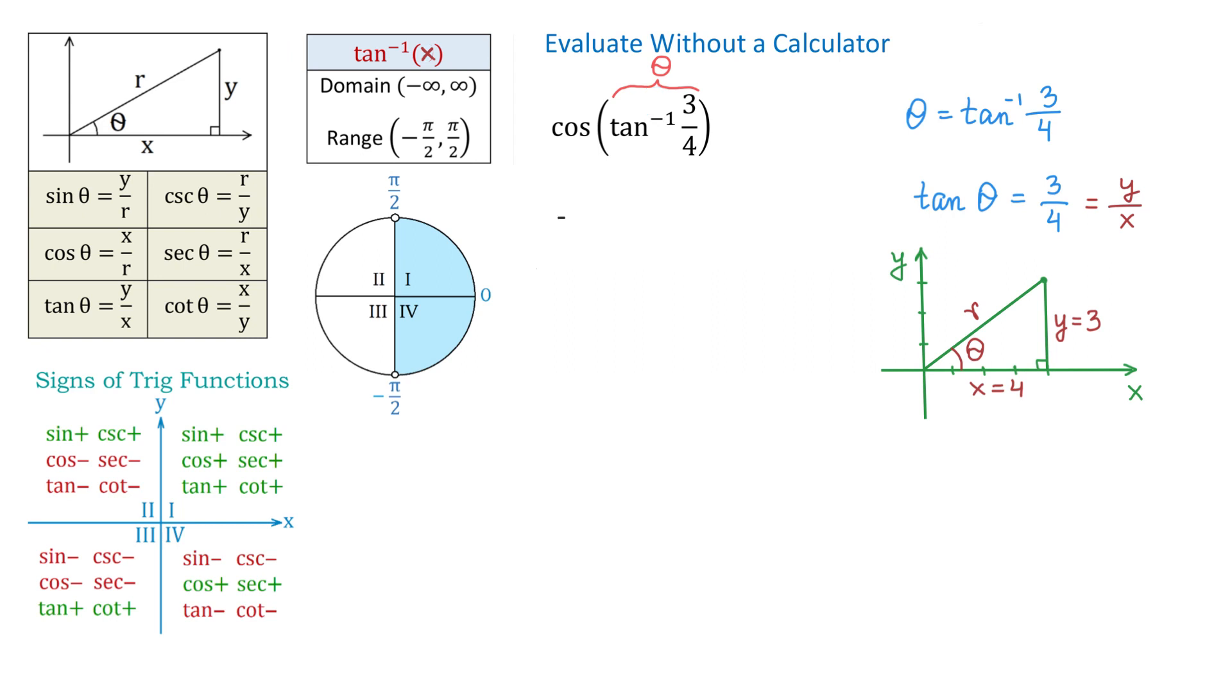Let's see how we can find cosine of theta. From the definition of trigonometric functions, cosine of theta is x over r.